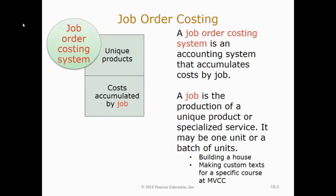The system we're going to focus on in this chapter is called job order costing. Job order costing is used by companies which produce specialized or unique products — they're not mass manufacturing millions of the same exact product; they specialize in making essentially custom things. Building a house would be an example, or making a custom text for a specific course at MVCC. They use job order costing to track inventoryable product costs that go into each job, and to know what level to expense when they actually sell the job to the customer at the end of the period.